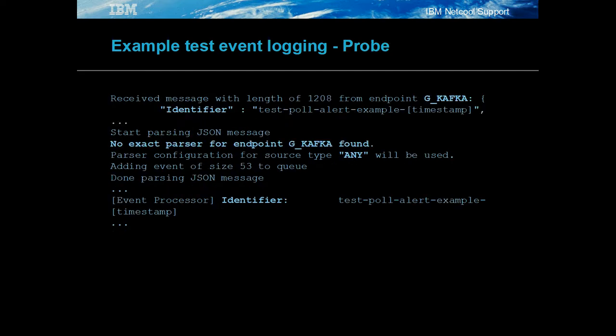In the debug log of the probe, the G_Kafka endpoint is logged along with the identifier. The default JSON parser is used to process the event, with the $Identifier token holding the original @Identifier value for the event.